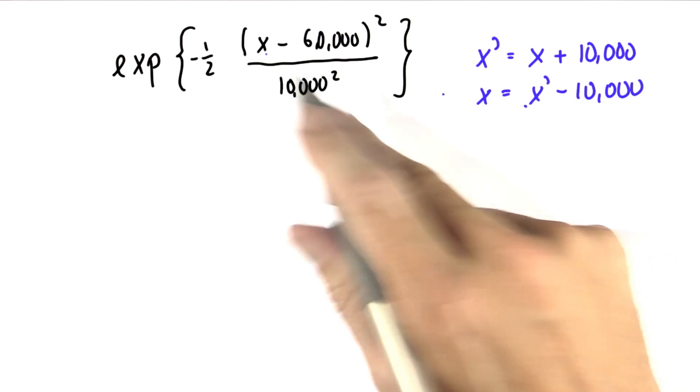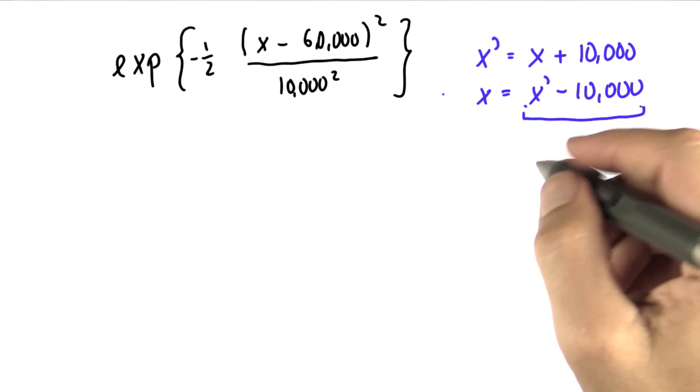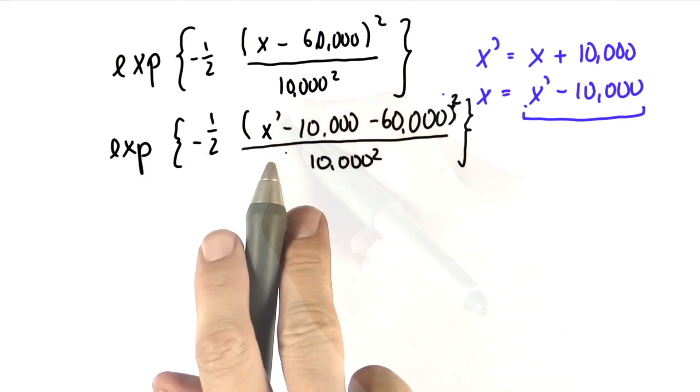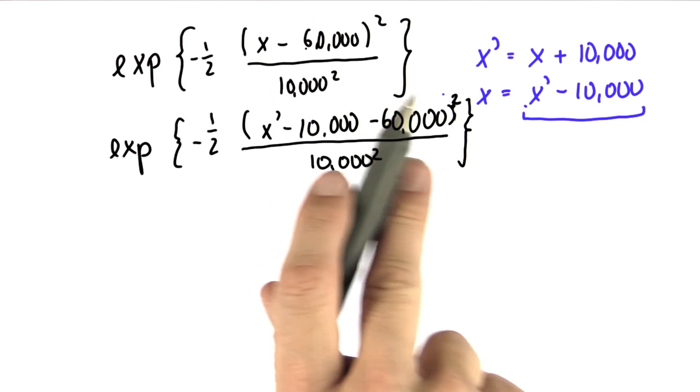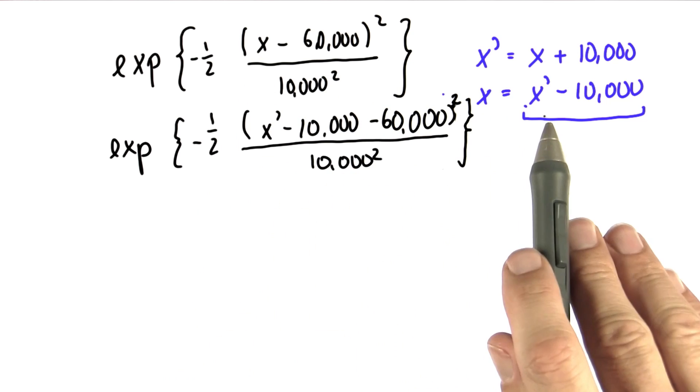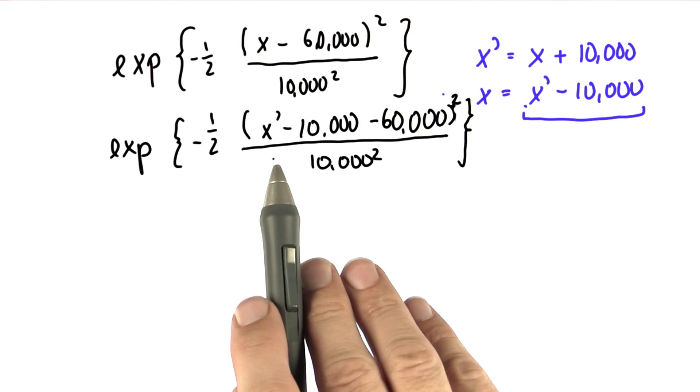If we now substitute this x over here with this expression over here, what we get is something that looks as follows. So you can see I took out the x and replaced it by x' minus 10,000. And if you look at this carefully,